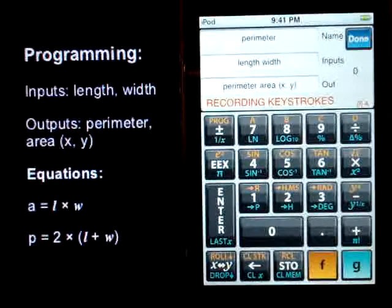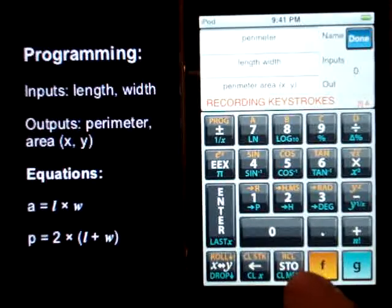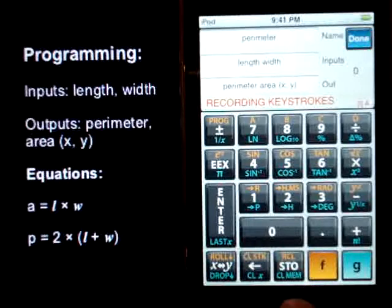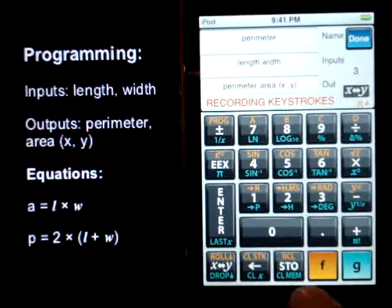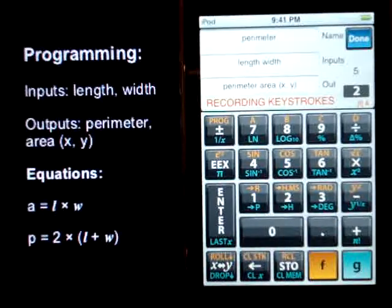We'll hit record. The first thing we did was store the length and width. Store 1. X exchange Y. Store 2. They're still in the stack. We multiply them for the area.